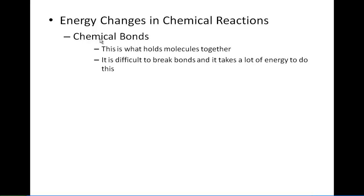We have chemical bonds, and these are the bonds that hold molecules together. There are different types of chemical bonds, like ionic and covalent. They are a bond that is difficult to break, and it takes a lot of energy to sometimes break these bonds. And if bonds are broken, a lot of energy has to go into breaking these chemical bonds.